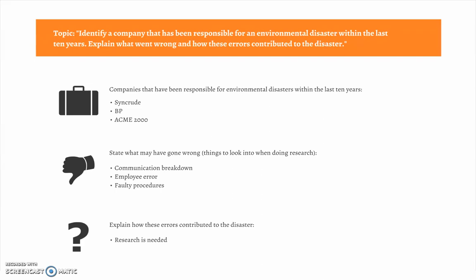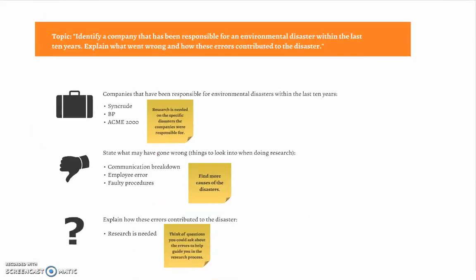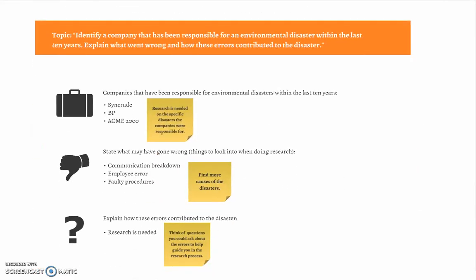To explain how these errors contributed to the disaster, more research is needed. It is clear that preliminary research is needed on the specific environmental disasters the companies were responsible for. Perhaps a few more companies can be identified. As well, there are only a few things listed that may have gone wrong, so it would be worthwhile to look into more causes of the disasters.